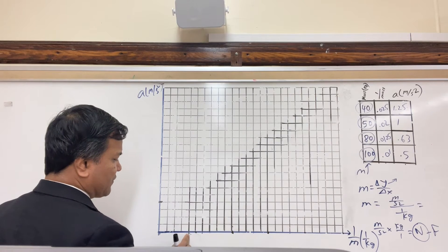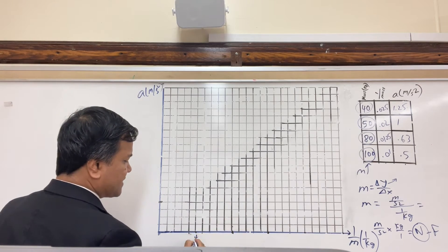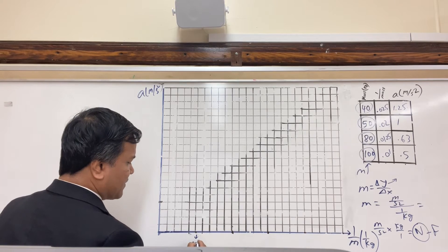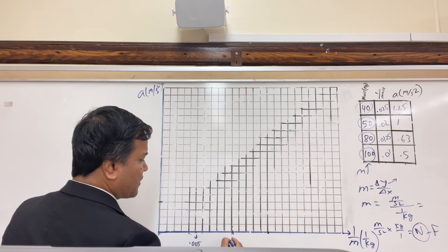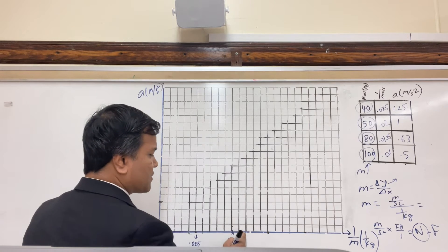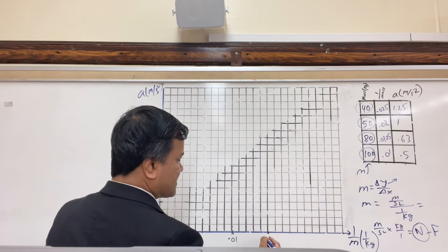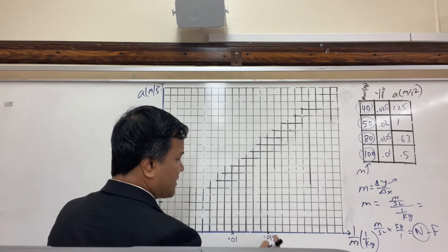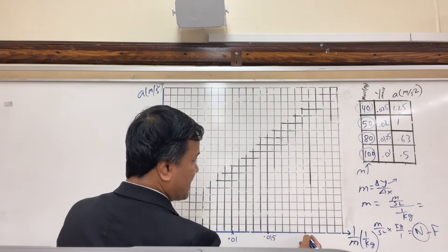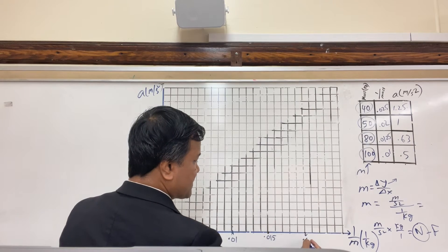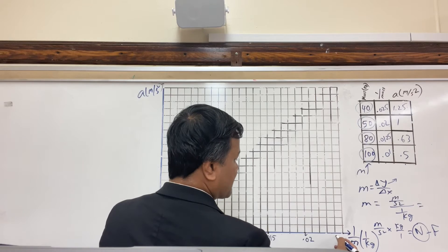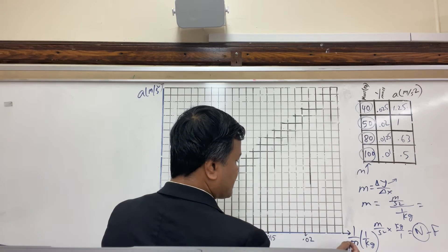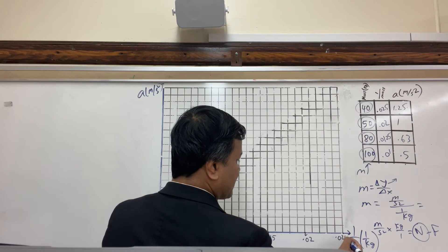Let's go by five boxes, incrementing by five boxes. Let's make it 0.005, then 0.01, then 0.015, then 0.02, then 0.025. This is our x-axis.